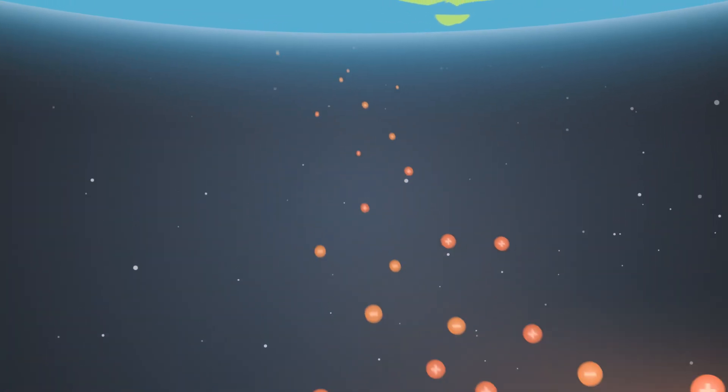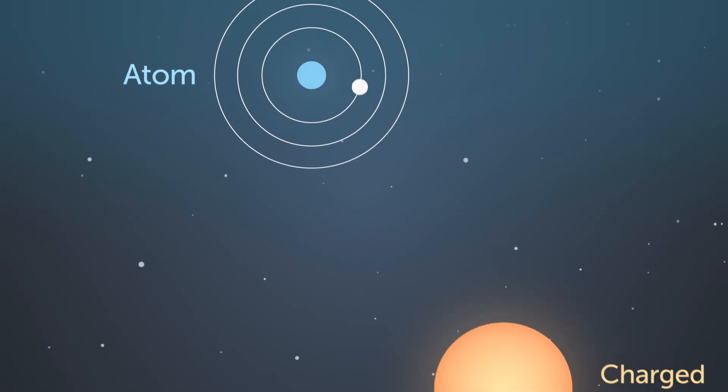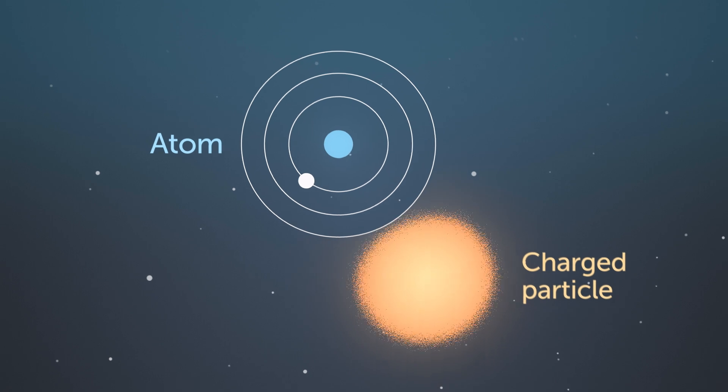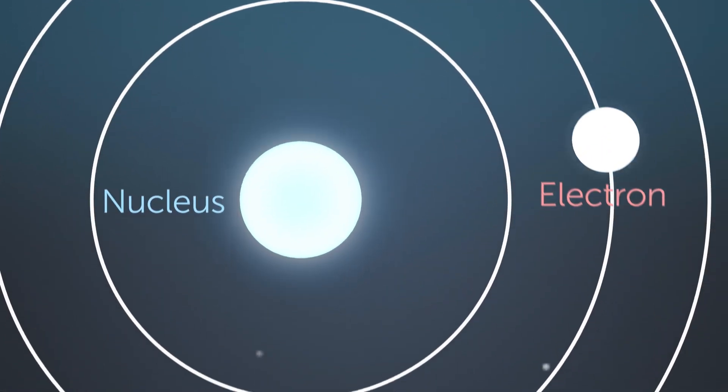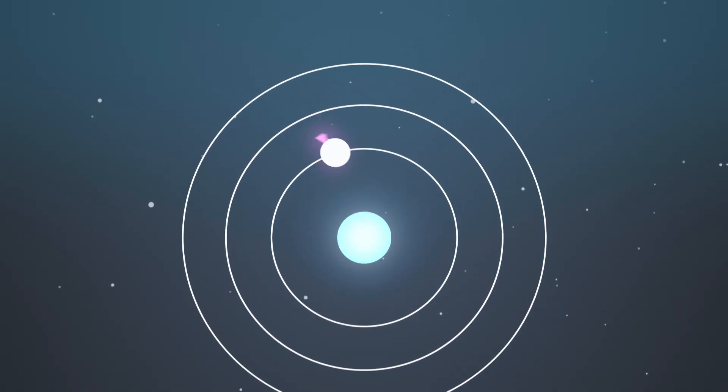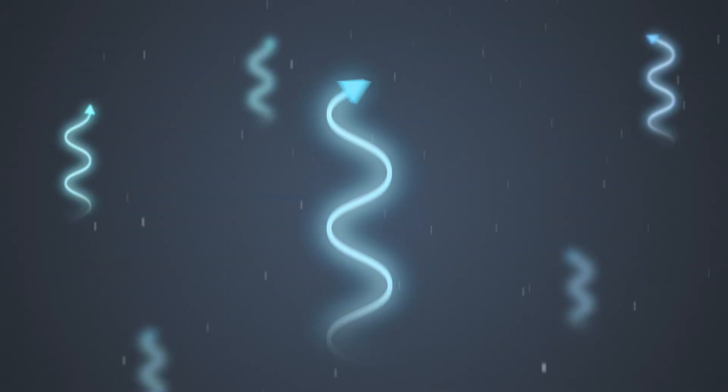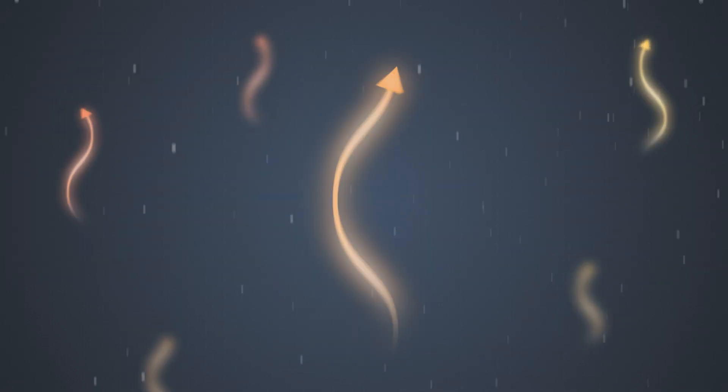When these particles reach the upper atmosphere, they collide with neutral atoms of oxygen and nitrogen. During these collisions, the charged particles transfer energy to the atoms, exciting the electrons to higher energy levels. When the electrons return to their original energy level, the atoms release this energy in the form of light at various different wavelengths, and the wavelengths determine the colour of the light.